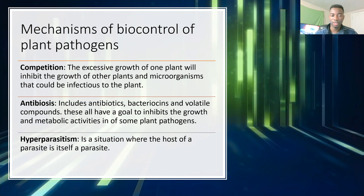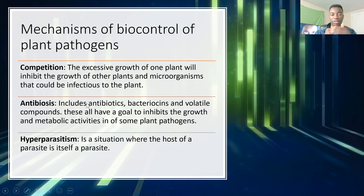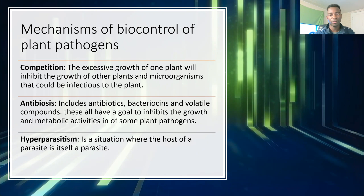Competition is related to concepts like parasitism and commensalism. Competition is where excessive growth of a single organism colonizes and basically eradicates the pathogen that causes disease to the plant. The growth of one organism inhibits the growth of another plant or microorganism causing infection. Antibiosis is separated into different subheadings, which includes antibiotics, bacteriocins, and volatile compounds.